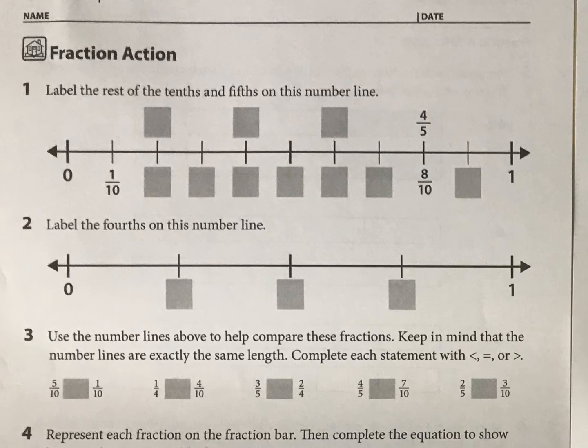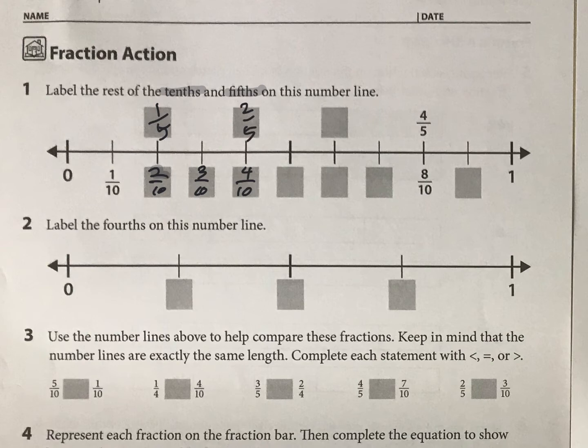We are first looking at a couple number lines and using that to help us compare fractions. So we are doing tenths below the line and fifths above the line. For the tenths, it's pretty simple. Just keep going. They give you one tenth, so you're going to go two tenths, three tenths, four tenths, and so on. And then for the fifths, you have five fifths. So start with one fifth and two fifths and so on to fill that in.